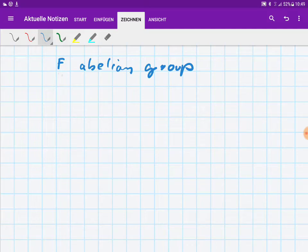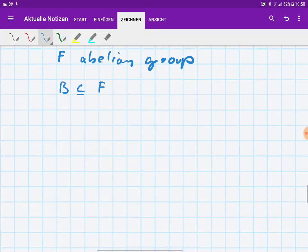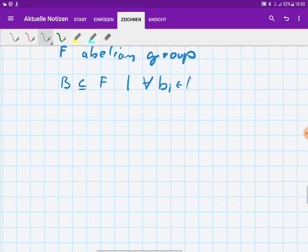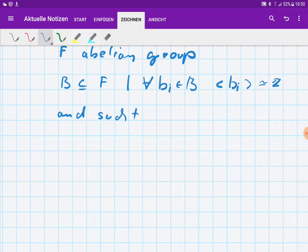Now we want to say that F is free if the following is true. There is a subset B inside F such that for every element bi in B we have that the cyclic group generated by this element bi is infinite or in other words is isomorphic to the whole numbers, such that our group F is a direct sum of these cyclic groups bi.